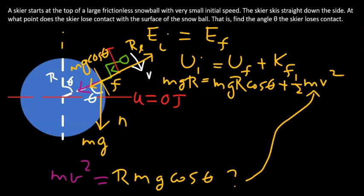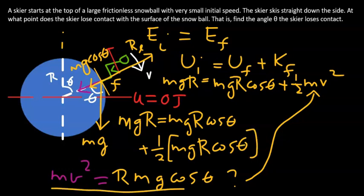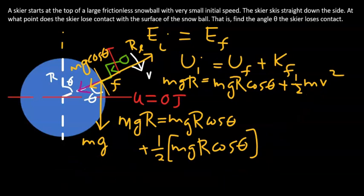If you do that, that equation will become mgR equals mgR cosine theta plus half mgR cosine theta. That is using this equation that we have just found. You see, all the terms contain mgR, so they will just get cancelled. Or you can divide left and right hand side of this equation by mgR.